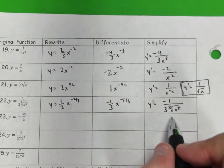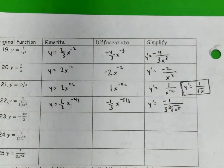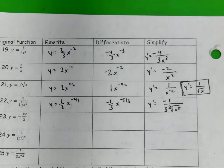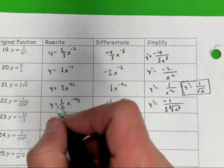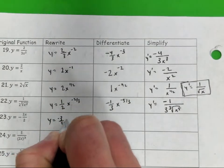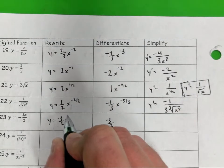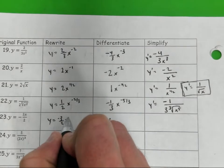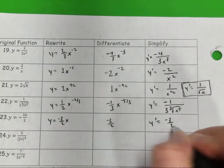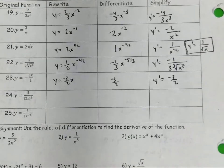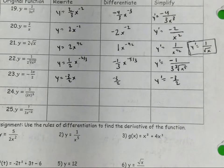Do you see how I rewrote that? It was x to the negative 5 thirds. Leave the negative 1 in the numerator, 3 goes in the denominator, your root is there, and then your exponent is x to the 5th — that's your derivative. Number 23 — there's nothing really new here. That's just negative 3 halves x. 1 times negative 3 halves is negative 3 halves. 1 minus 1 is 0, so y prime is just negative 3 halves.